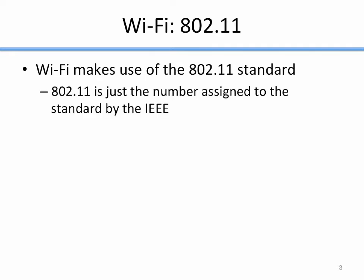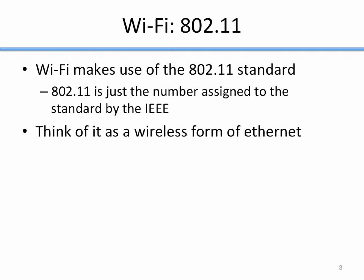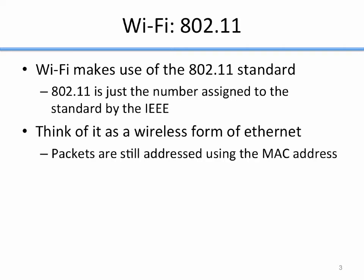802.11 — the number itself — is just the number assigned to the standard by the IEEE. When the IEEE was standardizing it, that was just the number they used, so it doesn't have any intrinsic meaning. The best and easiest way to think of 802.11 is as a wireless form of Ethernet. Wireless packets are still addressed using the MAC addresses of devices — in this case, the MAC address of your wireless card instead of an Ethernet card.